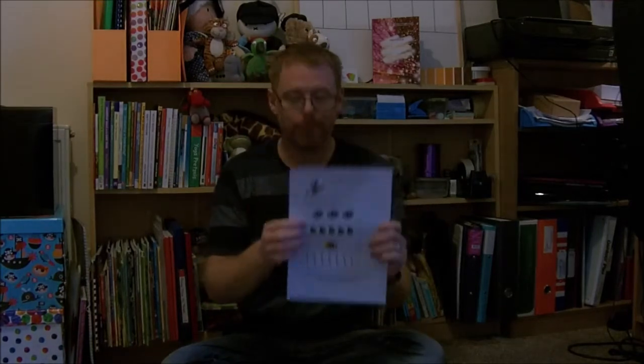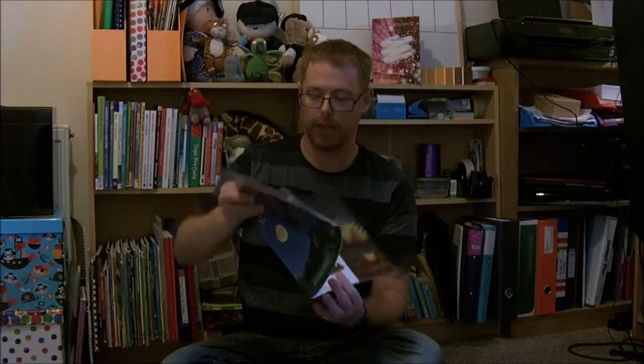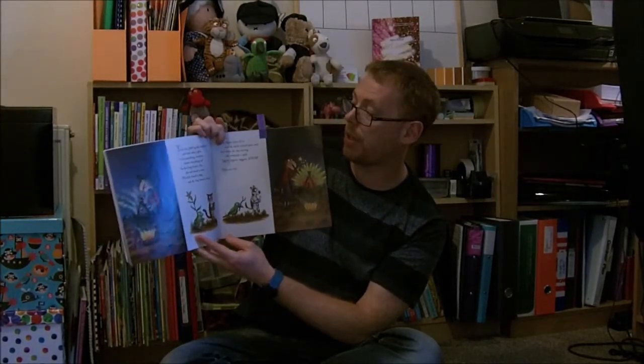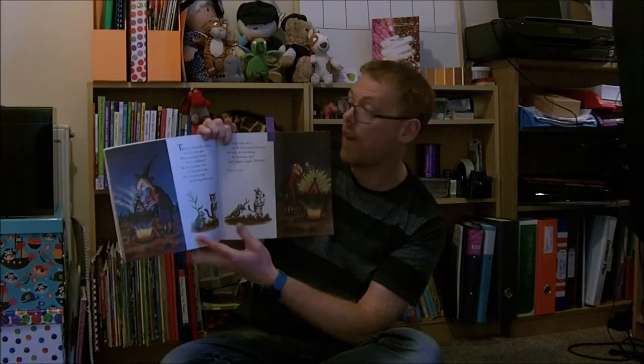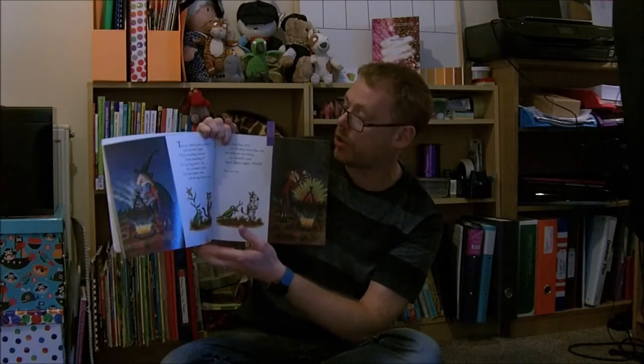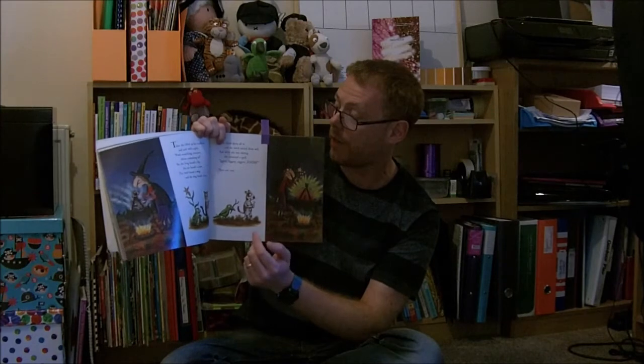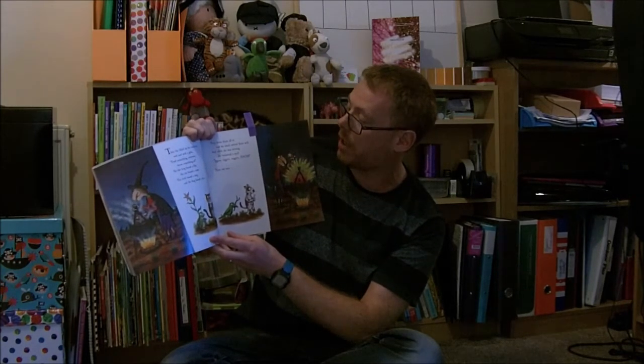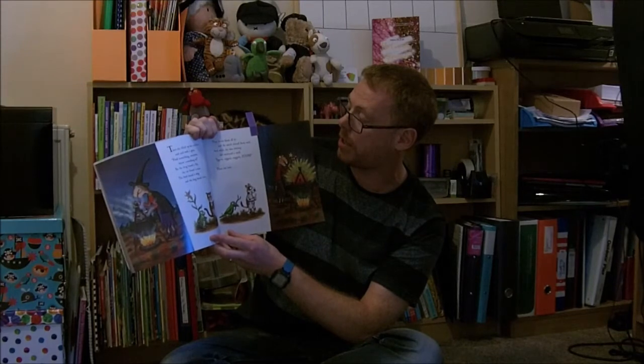The reason it's turning into maths is because at one point in the book it says, 'Then she filled up a cauldron and said with a grin, find something everyone, throw something in. So the frog found a lily, the cat found a cone, the bird found a twig, and the dog found a bone. They threw them all in and the witch did them well, and while she was sitting she muttered a spell: iggity ziggity zaggity zoo.'